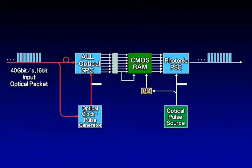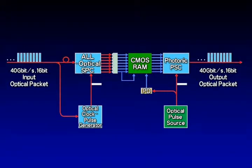The optical serial-to-parallel converter divides the signals into low-speed parallel optical signals. The signal processing electronic circuit identifies and processes the signals. The photonic parallel-to-serial converter then reassembles the low-speed signals into a high-speed optical packet for output.